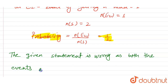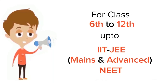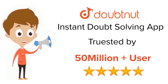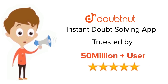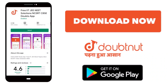Both events are equally likely. For Class 6–12, IIT JEE, and NEET level — trusted by more than five crore students — download the DoubtNet app today.